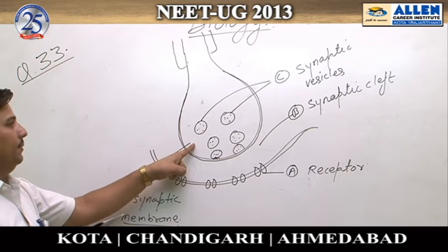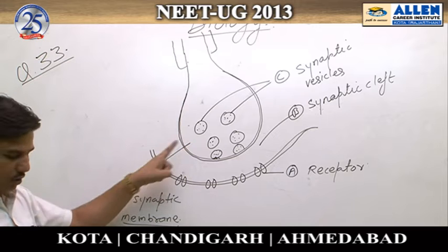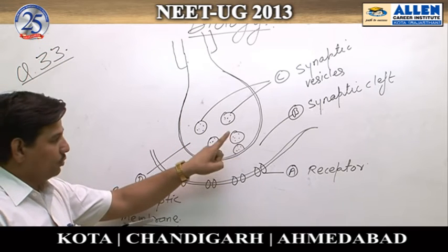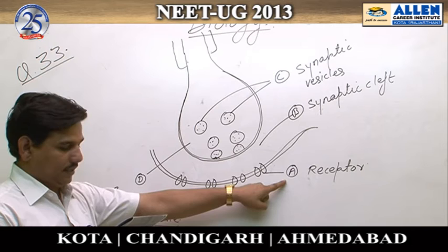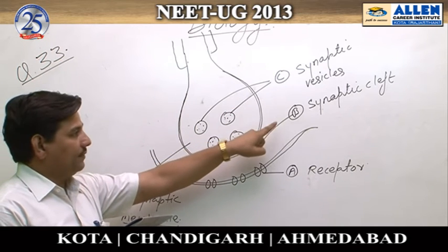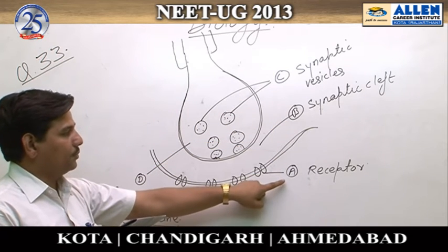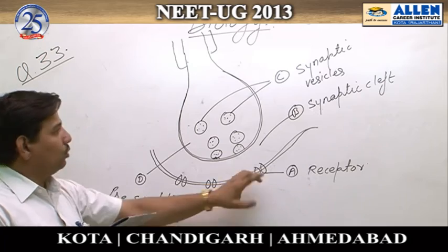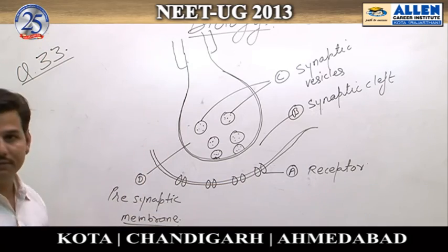In option four, A is stated as neurotransmitter, but the correct label for A is receptor. B as synaptic cleft is correct, but since A is wrong, option four is incorrect overall. Therefore, among all four options, the answer is option two.